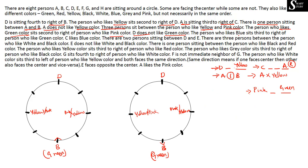Next: the person who likes blue sits third to the right of the person who likes green, so green's third right must be blue. If green is facing inward, counting 1, 2, 3, blue is placed at one spot; if facing outward, blue is placed at another. Then C likes blue color — that is a direct statement. Since blue has already been placed, C must be substituted at that position.